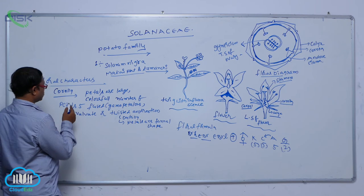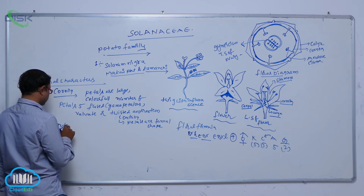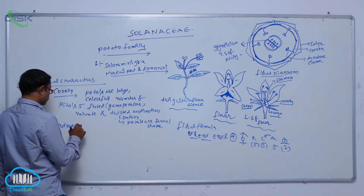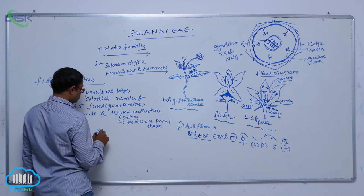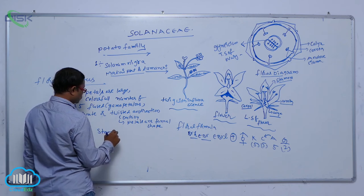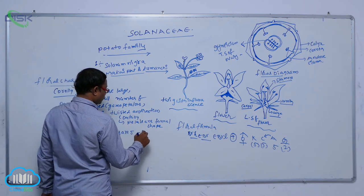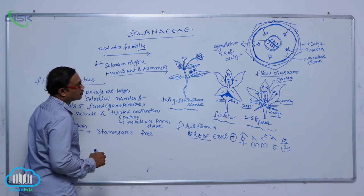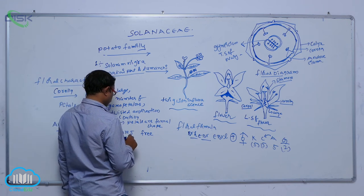After the corolla comes the androecium. The androecium consists of the male reproductive organs. Stamens are five, free, and they are attached to petals.